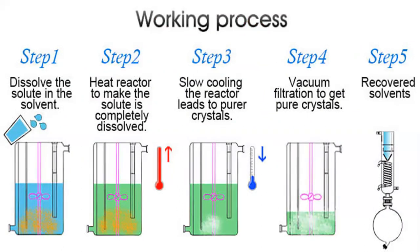The solute is first dissolved in the solvent, then the reactor is heated to make the solute completely dissolve. Slow cooling of the reactor then leads to pure crystals. In step four, vacuum filtration is used to get pure crystals, and in step five the recovered crystals are separated and sent for further processing.